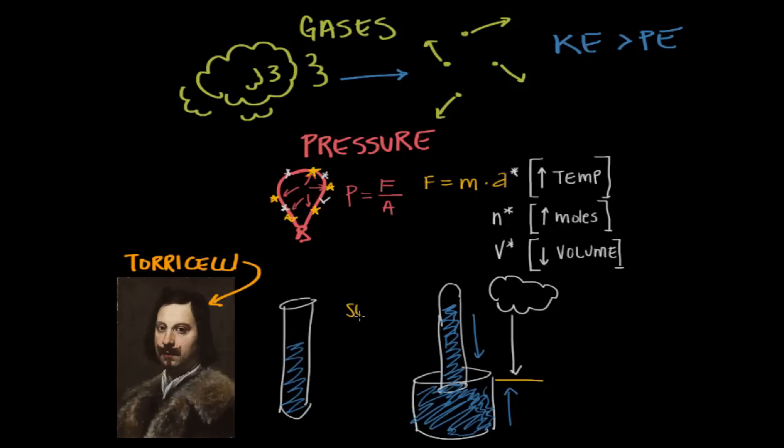And we see that at sea level, the height of the mercury that's left in the column is about 760 millimeters.